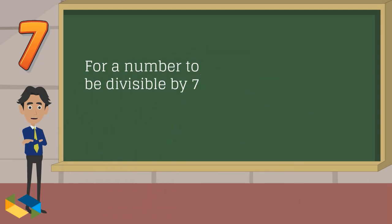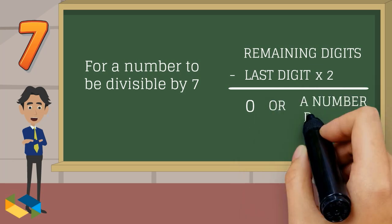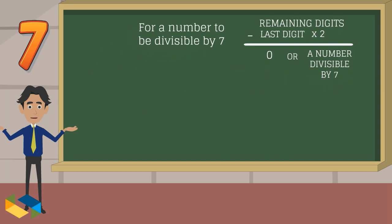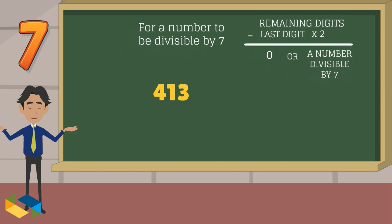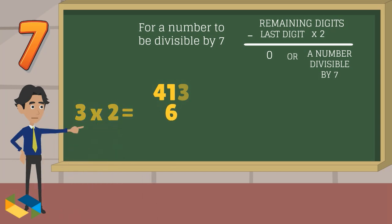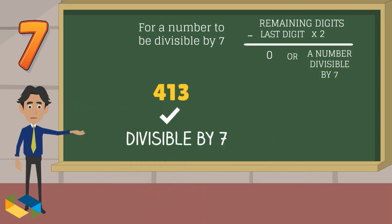In the divisibility rule for 7, we first take the last digit and double it, then we subtract the result from the remaining digits. If the result is 0 or any number that we know is divisible by 7, then the number passes the test. In 413, the last digit is 3; we double it to get 6, then subtract 6 from 41 to get 35, which is divisible by 7. So 413 is also divisible by 7.